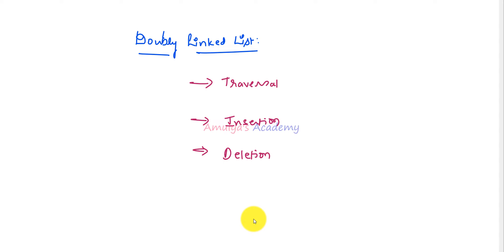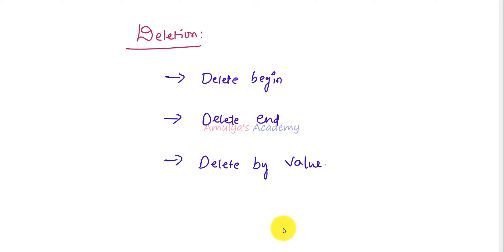Hello guys and welcome to Python programming tutorials by Amulya's Academy. We were discussing about the doubly linked list program, and previously we wrote the code for the traversal operation as well as insertion operation. Today in this tutorial we will discuss about deletion operation. For the deletion operation of the doubly linked list we will write three methods: how to delete a node from the beginning, from the end, and how to delete the node by value.